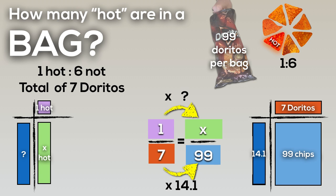And if we find that missing factor, taking 99 divided by seven, we find it's about 14.1 times bigger. And thus, we need to take one hot chip times 14.1 as well to get our total of 14.1 hot chips.